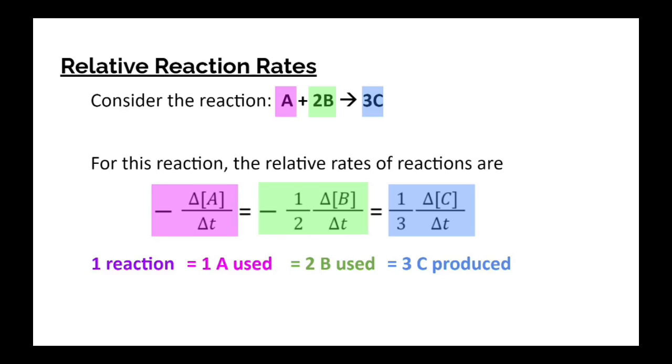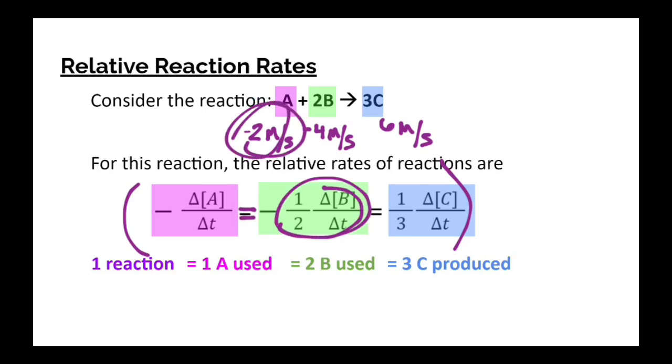Now, if I told you something like the rate of use of A is 2 molarity per second, you don't have to set up this whole relative rate expressions. You can just say, well, B is going to be twice as fast as A, so that's going to be used up at 4 molarity per second. And C is going to be produced at 3 times that rate, which would mean it's being produced at 6 molarity per second. And technically, since these are being used up, those should be negative there. So if I give you one of the numbers, then we can always just do that math and follow those ratios here. But this is still true. The rate of change of A is equal to half of the rate of change of B.